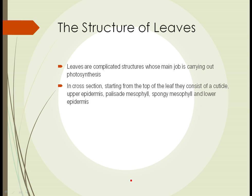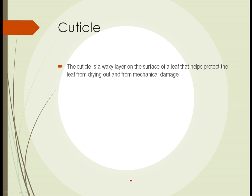Now we'll look at the structure of leaves. Leaves in a plant are quite complicated structures whose main job is carrying out photosynthesis — to create food and energy for the plant. In cross-section, starting from the top of a leaf, they consist of: cuticle, upper epidermis, palisade mesophyll, spongy mesophyll, and lower epidermis.